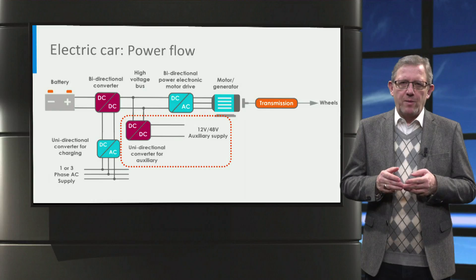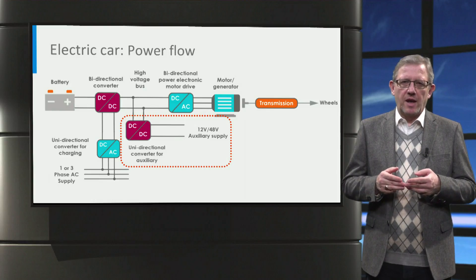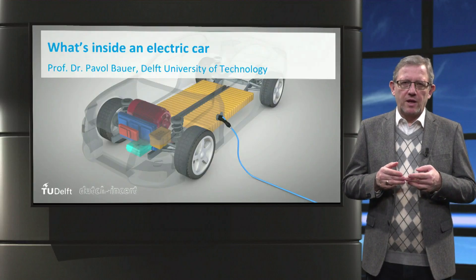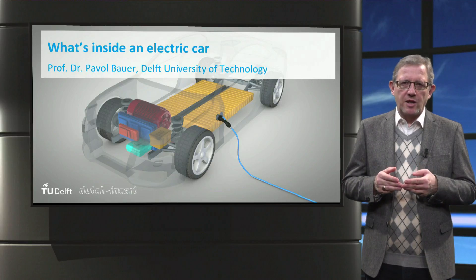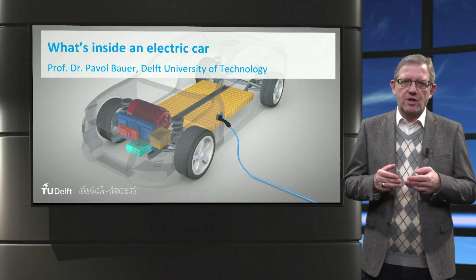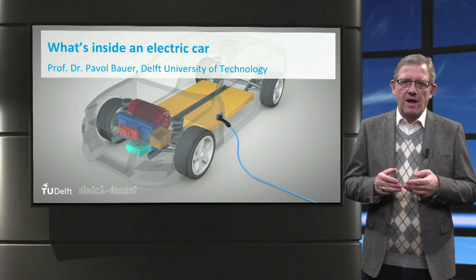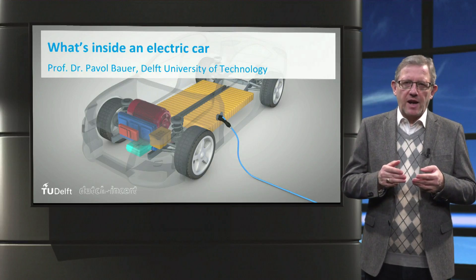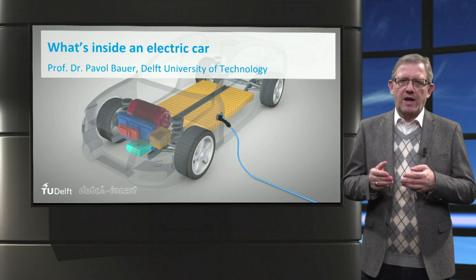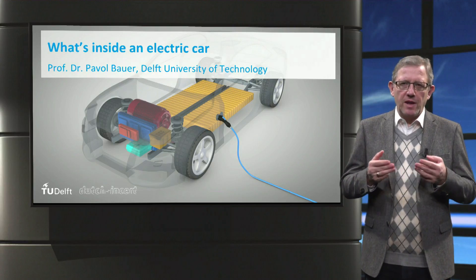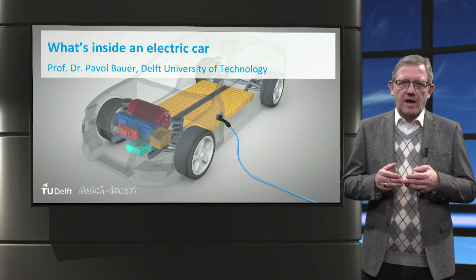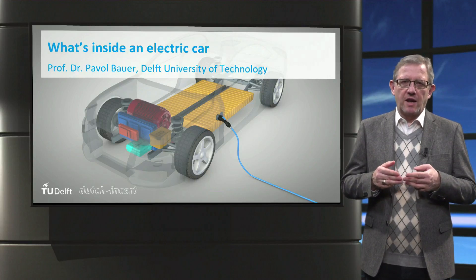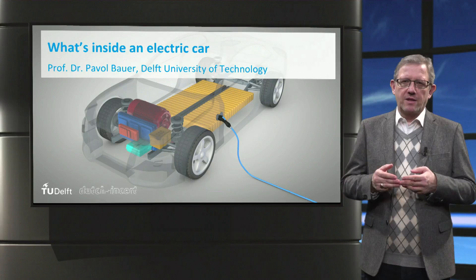To wrap up, the traction battery, the electric motor and the power electronics play a key role in the operation of an electric vehicle. Since power is exchanged between these components electrically using cables, it provides great flexibility in the design of the car. This flexibility is not possible with cars with a mechanical drivetrain due to the large size and weight of the mechanical components.